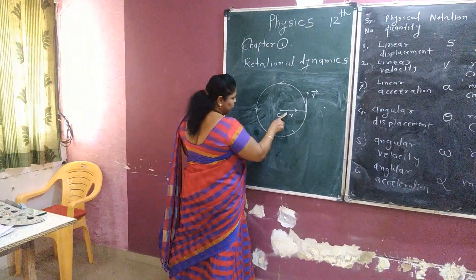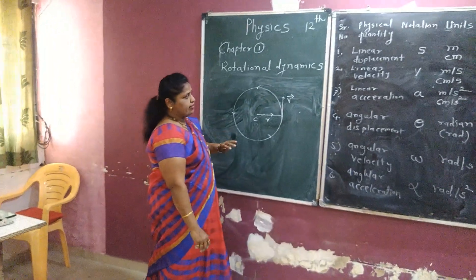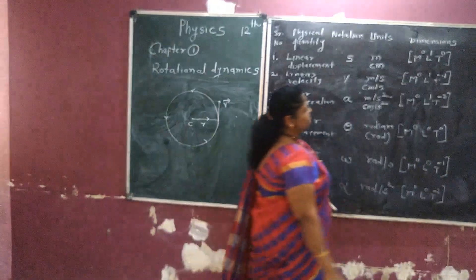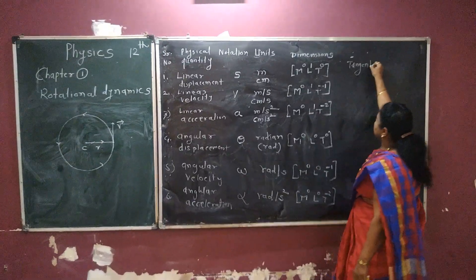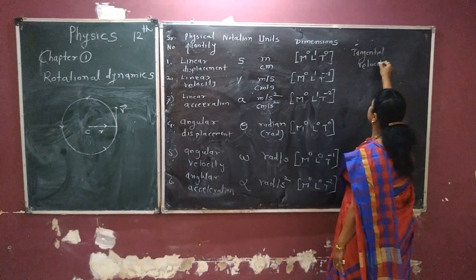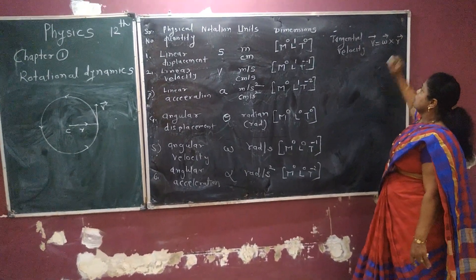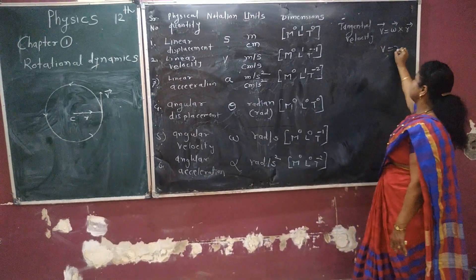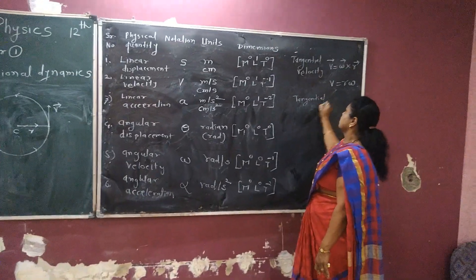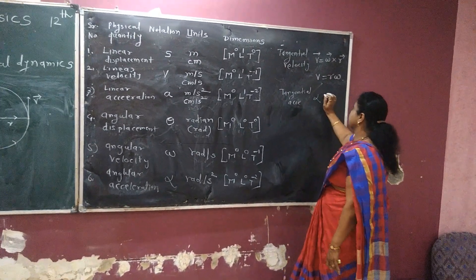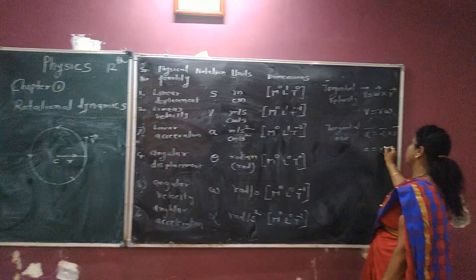Here we also study both acceleration and velocity, which are tangential. Tangential velocity is given by V⃗ = ω⃗ × R⃗ in vector form, and in scalar form V = Rω. Similarly, tangential acceleration is given by A⃗ = α⃗ × R⃗, that is A = Rα.